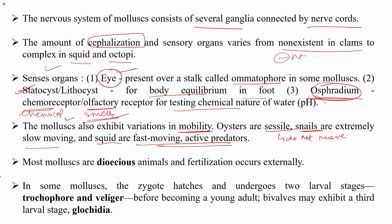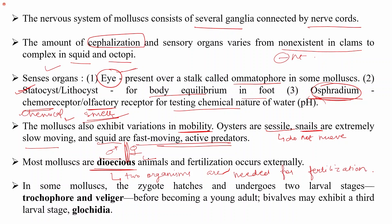Most mollusks are dioecious — meaning male and female reproductive organs are present in different organisms, so two organisms are needed for fertilization. Fertilization usually occurs externally: sperm and eggs are released into the environment, where the sperm contacts and fuses with the egg. The fertilization takes place outside the body of the female.